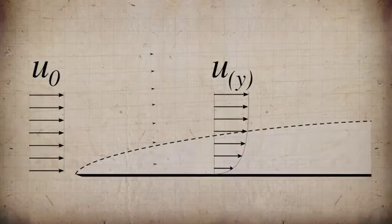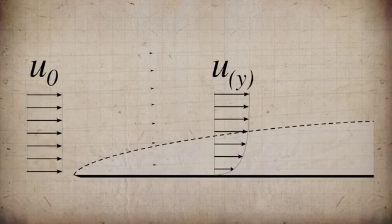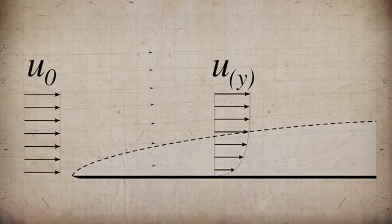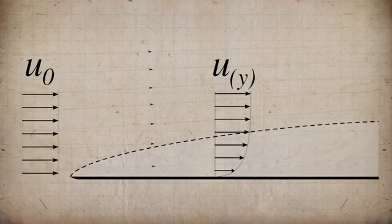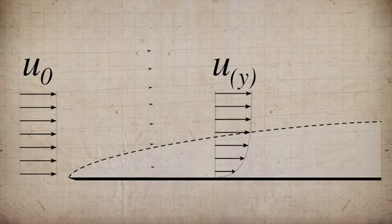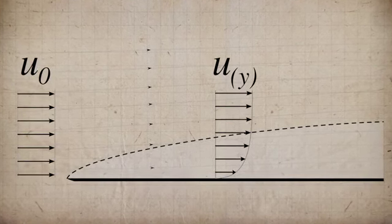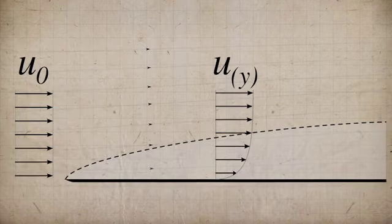came up with something called the boundary layer theory, which allowed the prediction of skin friction right along the surface of a boundary over which the flow was flowing. So this boundary layer theory allowed ultimately over a number of years pretty reasonable predictions of the skin friction within certain factors like turbulent and laminar boundary layers and so forth.